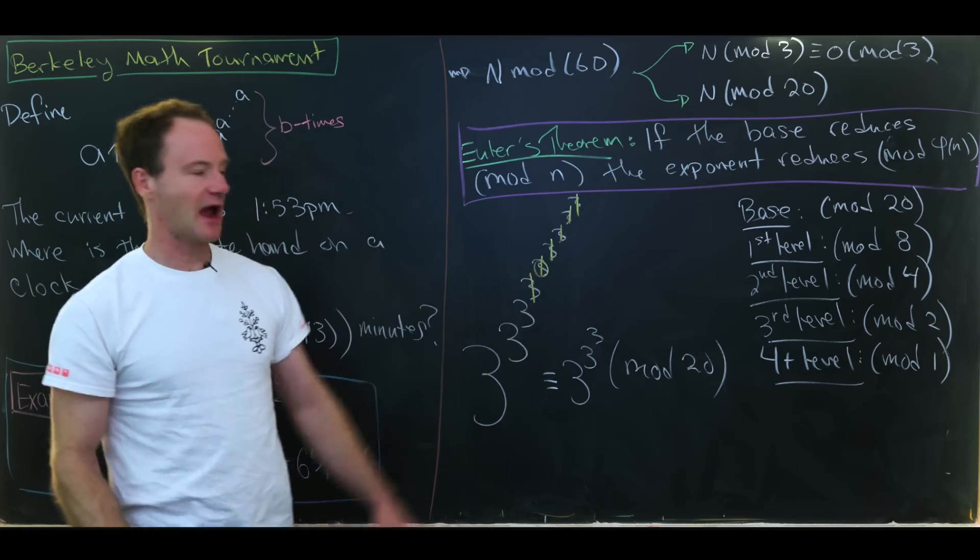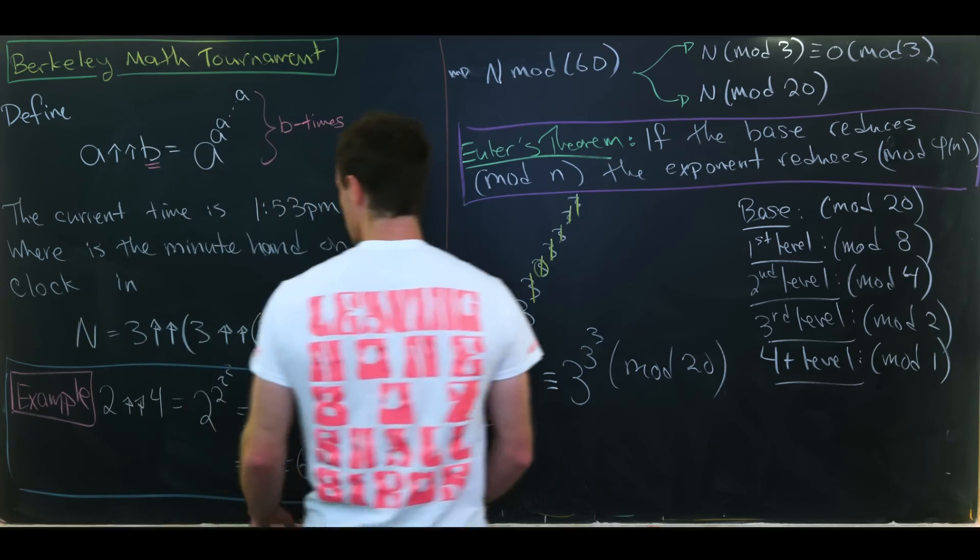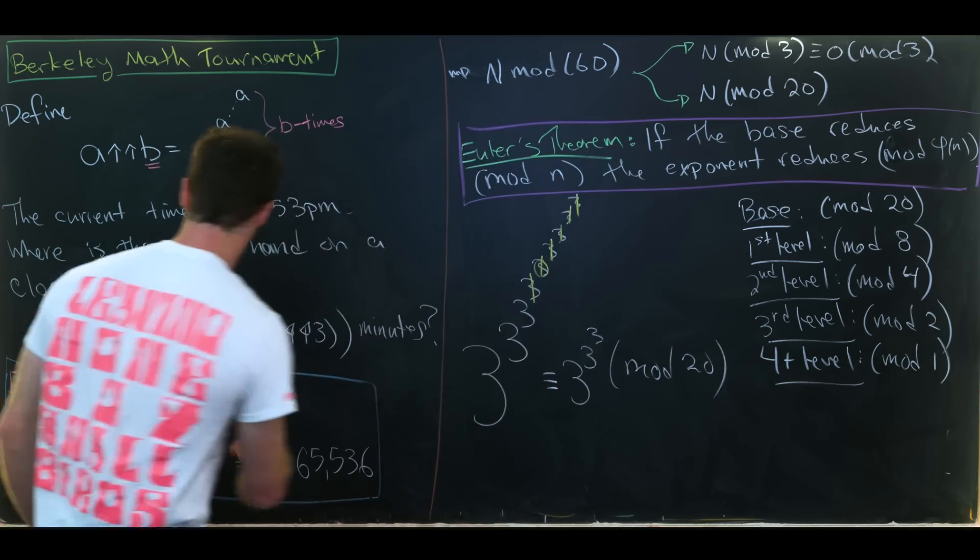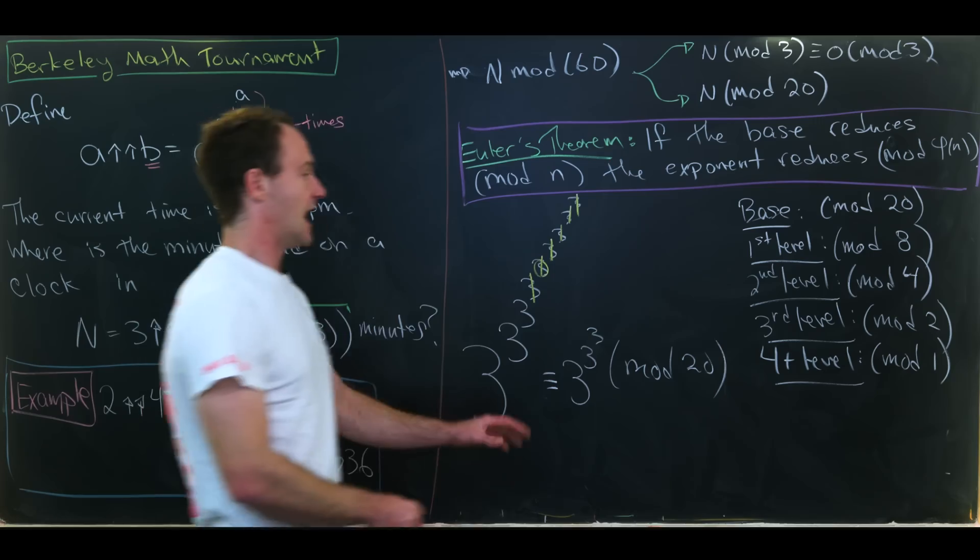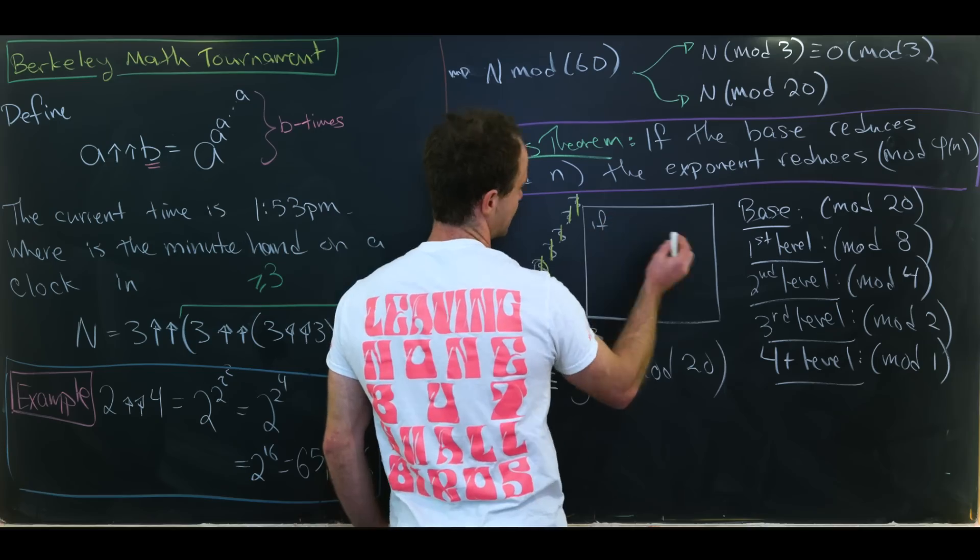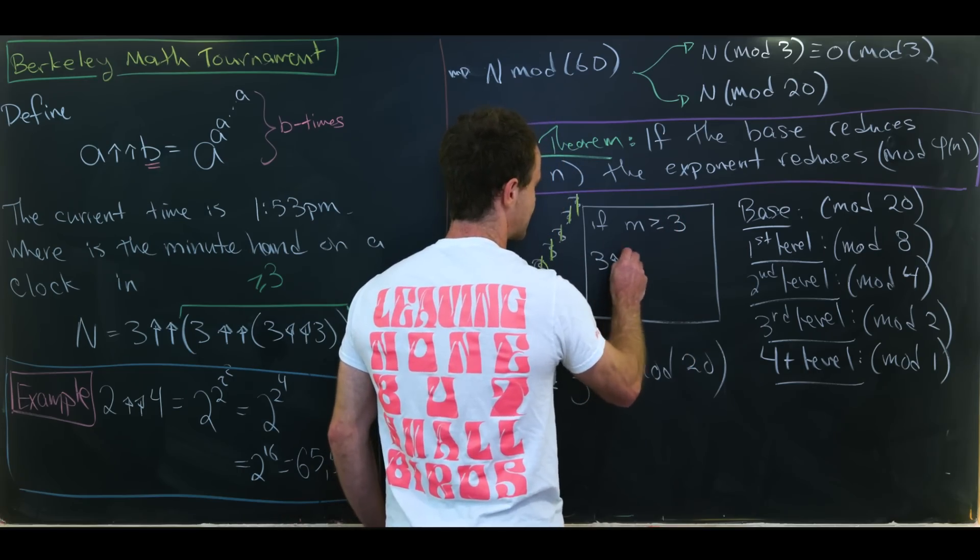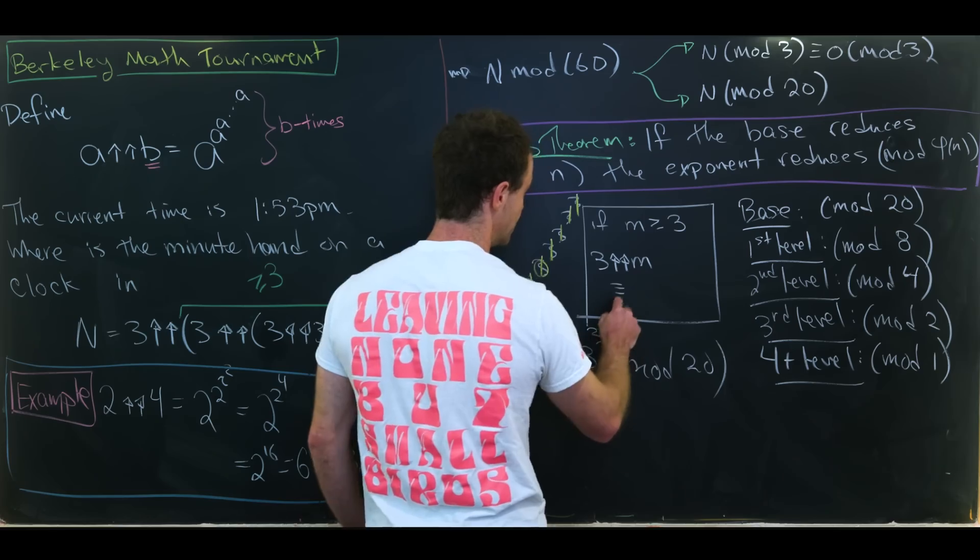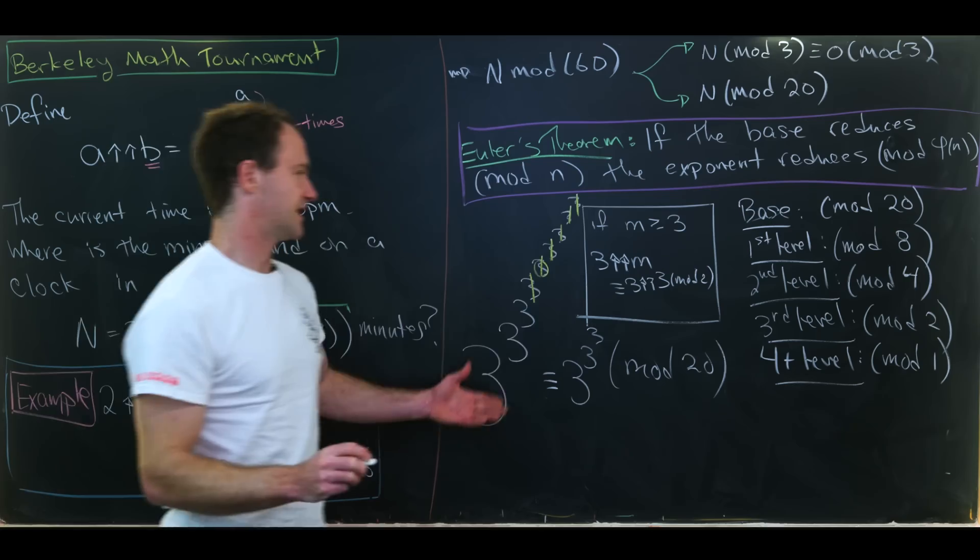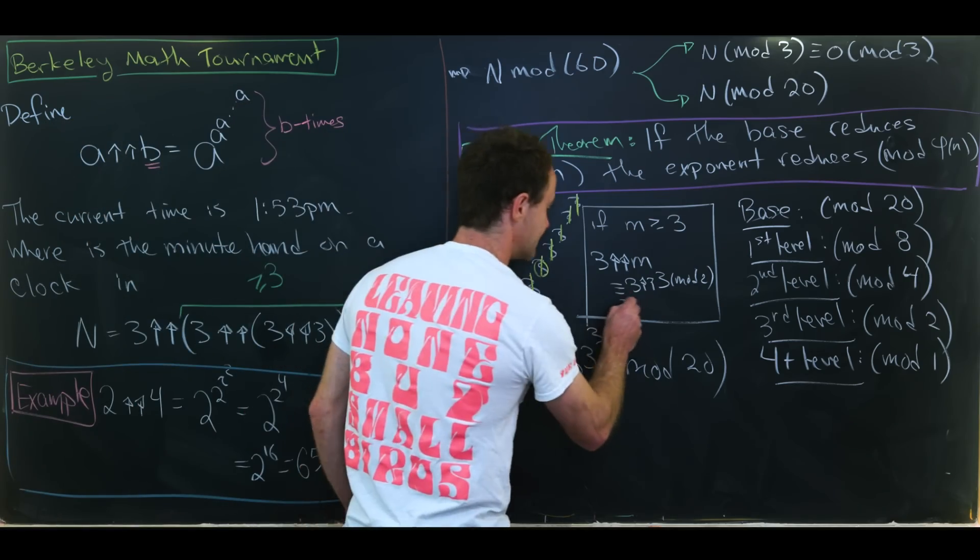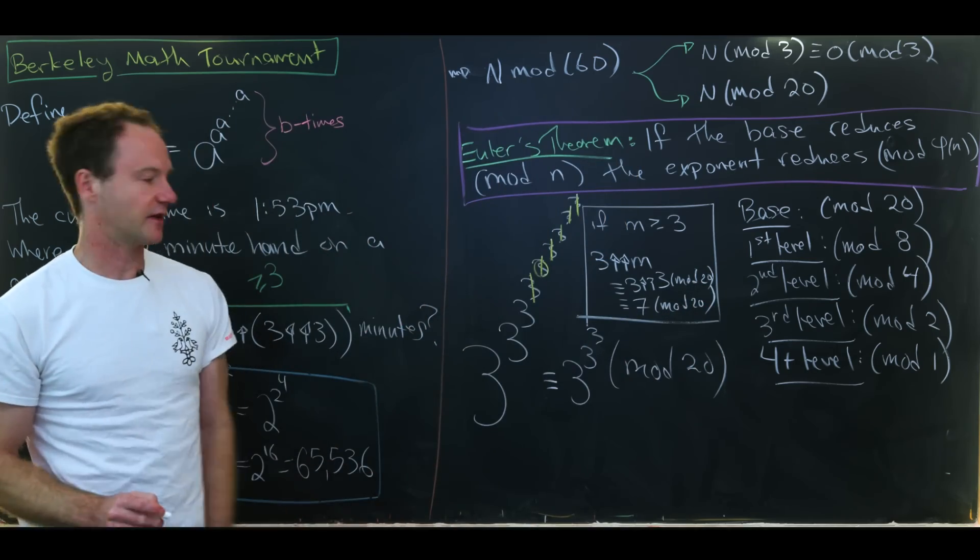But notice that it didn't really matter how big our power tower was here. All that mattered is that it was bigger than 3. So I think we can all agree that this number right here which is in our larger parentheses is definitely bigger than or equal to 3. And essentially what we've shown right here is if maybe I'll call it little m is bigger than or equal to 3 then that means 3 up up little m is congruent to 3 up up 3 mod 20 because of the systematic reduction that we've done. But that is congruent to 7 modulo 20 because that's what we calculated on the previous board.